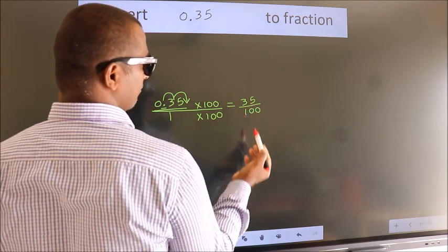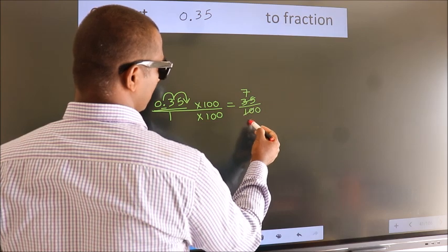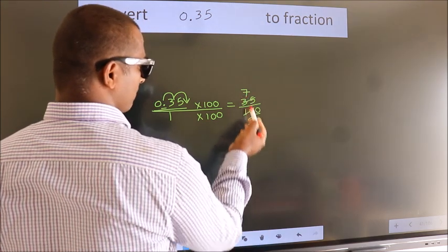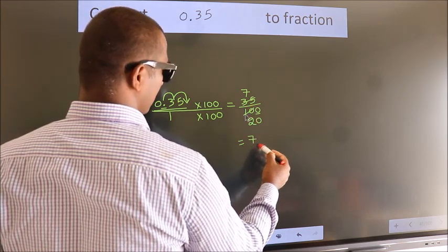Now I cancel with 5. 35 divided by 5 is 7, 100 divided by 5 is 20. This cannot be simplified further. So our fraction is 7 by 20.